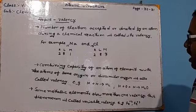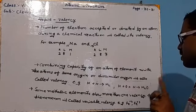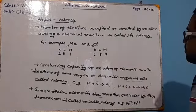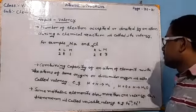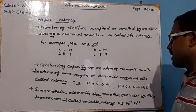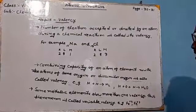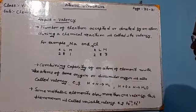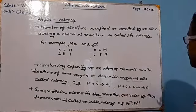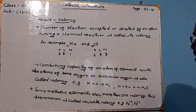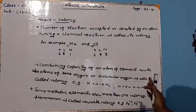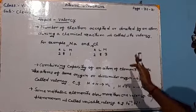In sodium, two electrons are present in the first orbit, eight electrons in the second orbit, and the remaining one electron is in the last orbit — the valence shell. In chlorine, two electrons are in the first orbit, eight in the second orbit, and the remaining seven electrons are in the third orbit, the outermost orbit.